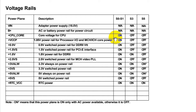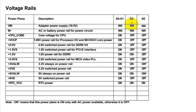For example, core voltage for the CPU is on in states S0 and S1, but off in states S3 and S5. The same applies to plus VCCP — on in S0 and S1, but off in S3 and S5.